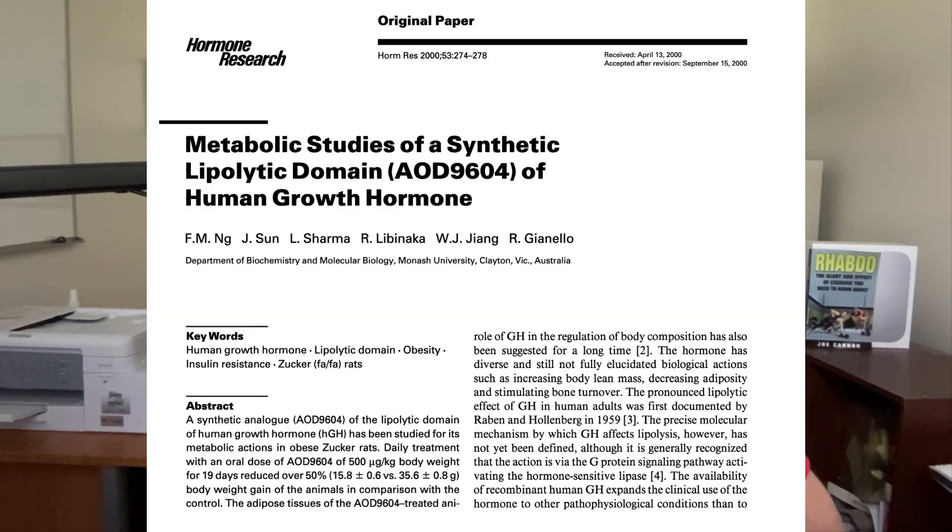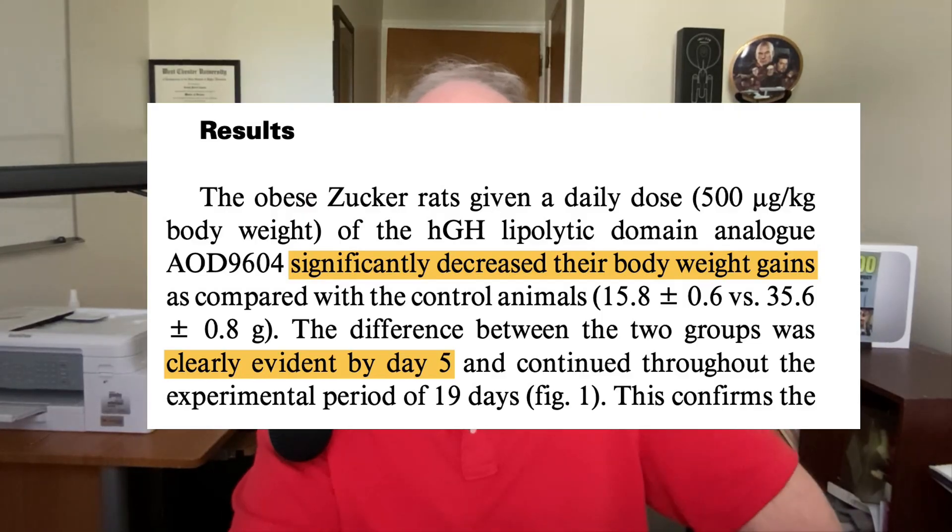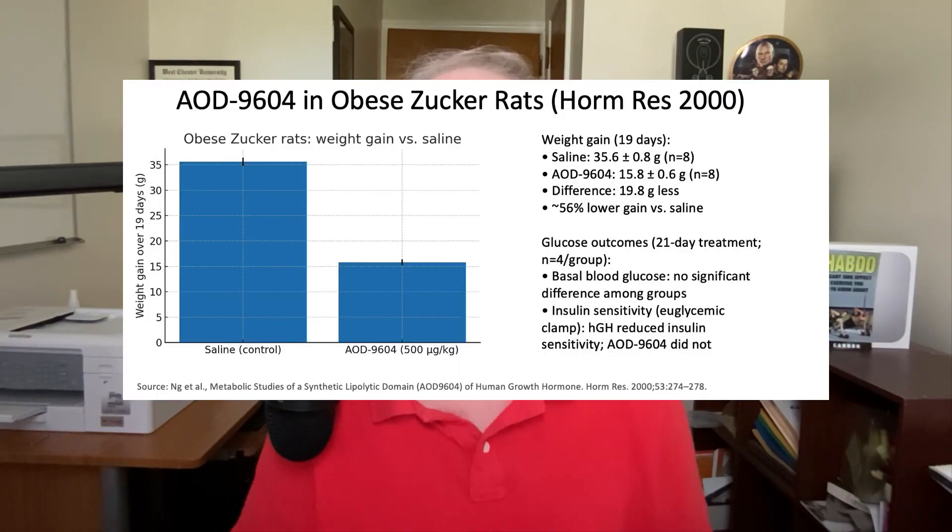So what does the research say about AOD 9604? Let's begin with this paper from the year 2000, where 15 obese mice were given 500 micrograms per kilogram of body weight of this peptide each day for 19 days. Compared to mice that received saline as a placebo, the mice that got the peptide gained 56% less weight — though importantly, the mice did not lose weight; they gained less weight. This study also revealed that the peptide did not elevate blood sugar and didn't increase the risk of insulin resistance — something that growth hormone does.